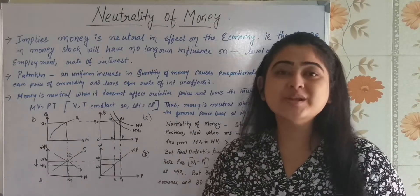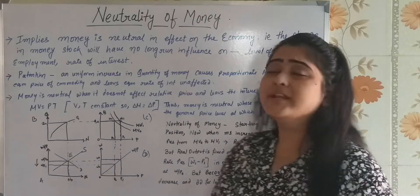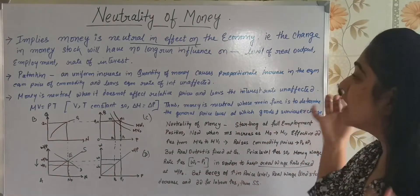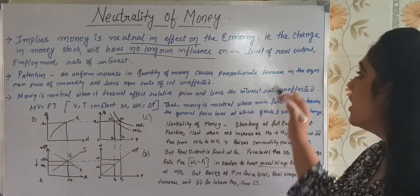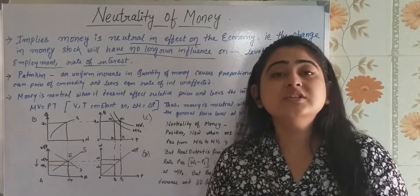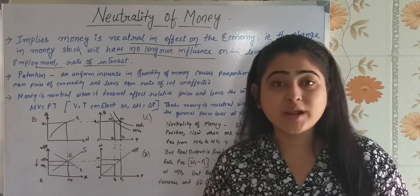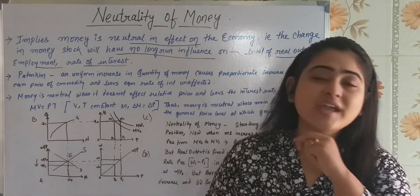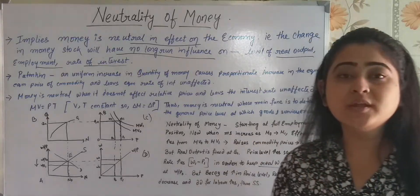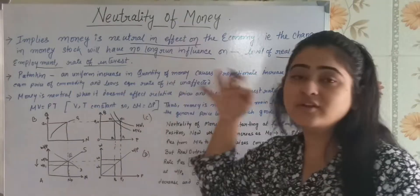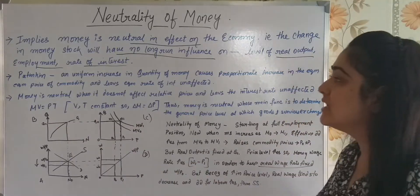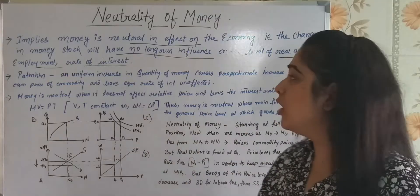The first and foremost thing is: neutrality of money implies a neutral effect on the economy. That is, a change in the money stock will have no long-run influence on the level of real output, employment, or rate of interest. If there is any change in the stock of money, it will not have any effect on the real variables. Under real variables we include real output, employment, and rate of interest — these things remain unaffected by a change in the money stock.